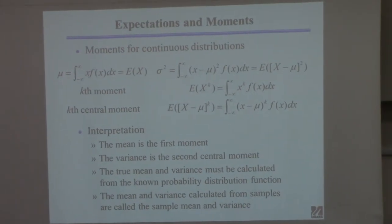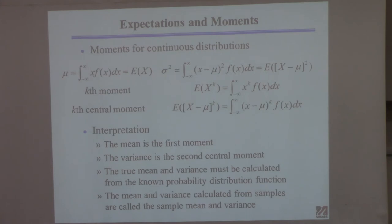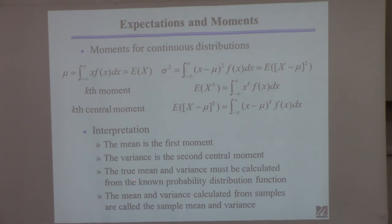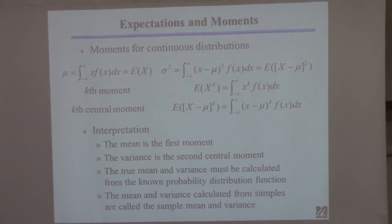An important point people get confused on: if you want to know the true mean and true variance, you must have the probability function and calculate it analytically. If you don't have the true distribution — which is usually the case — and you want to calculate the mean and variance, you do this from a finite number of samples. That gives you the sample mean and sample variance, and they're not the same thing.